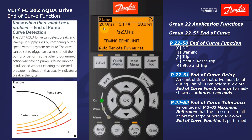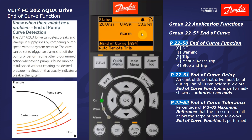I'm opening the valve and we see my set point drop. We're well below 15 psi. My timer right now is currently counting — approximately 5 seconds from now we should see the trip occur. And there you have it — the end of curve alarm has been displayed. This will not be reset until I press the reset key.